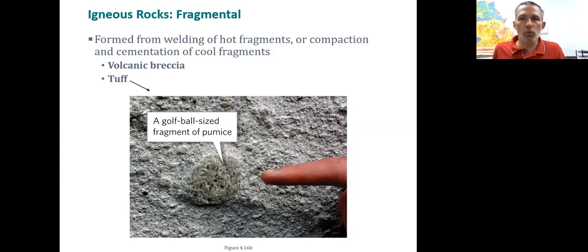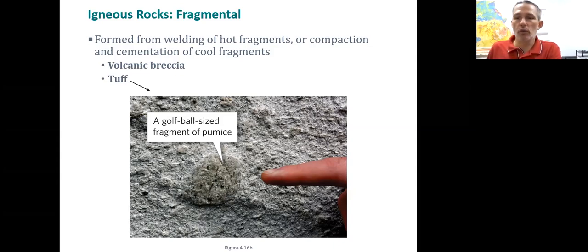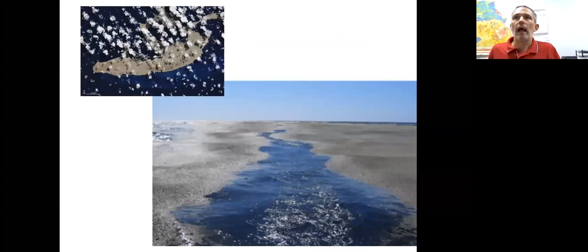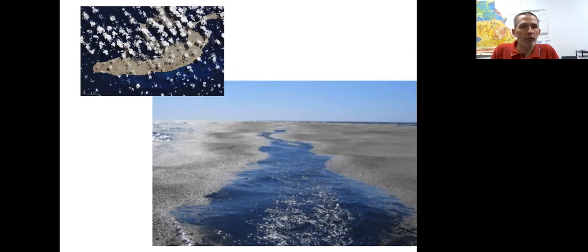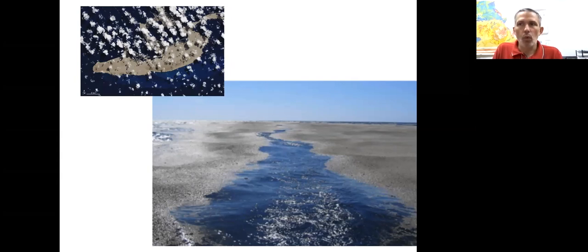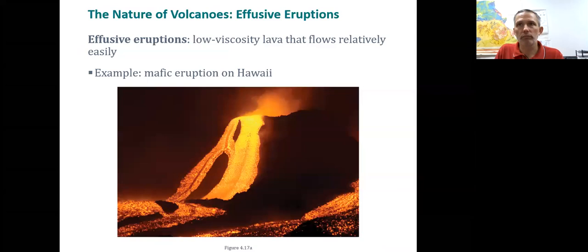Sometimes pumice can be erupted in the ocean. The USGS took some satellite images of a pumice raft — you can type 'USGS pumice raft' into an internet search to see this. Pumice is less dense than water. The lower image from the USGS shows pumice floating on water, and they're actually driving a boat through a pumice island — a floating island.